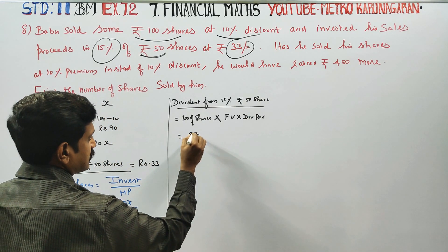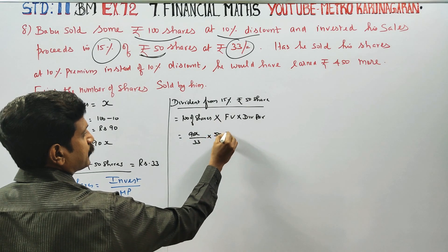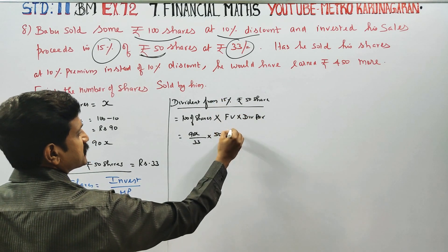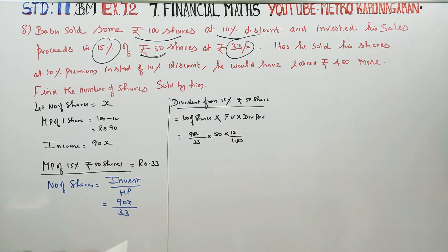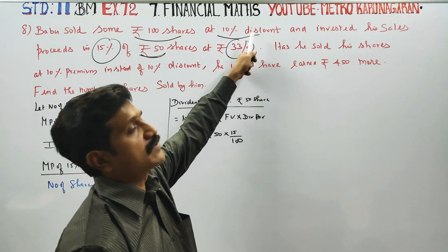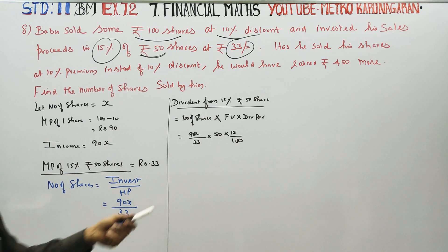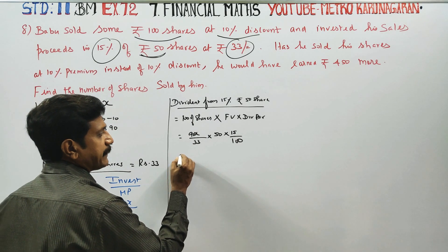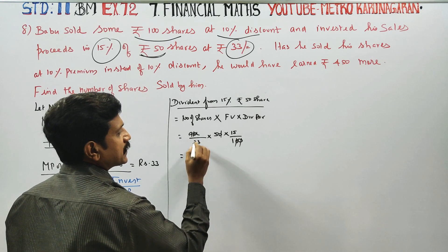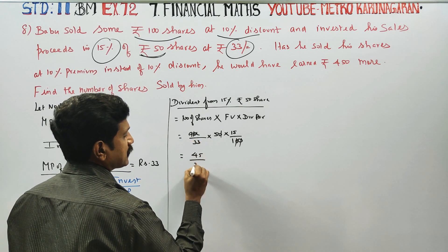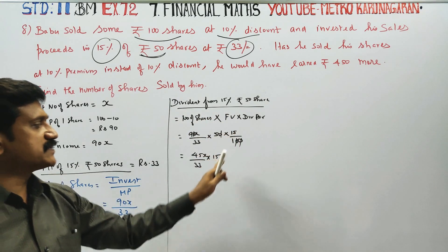The face value of the share is Rs.50. The dividend percentage is 15%, which is 15 by 100. So dividend from the 15% share is calculated using the formula: number of shares into face value into dividend percentage. This gives (90x/33) into 50 into 15/100.